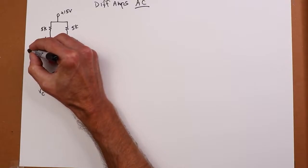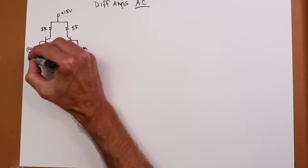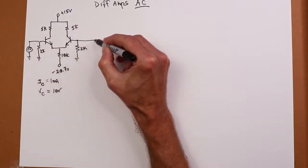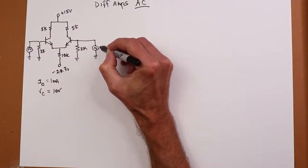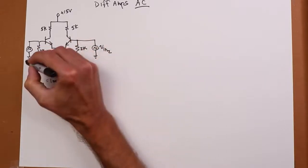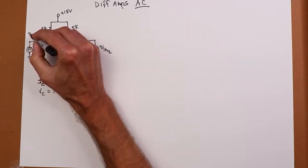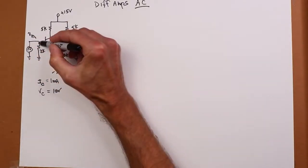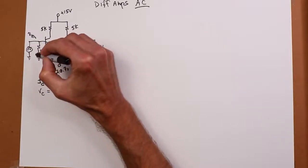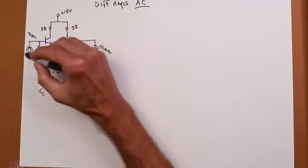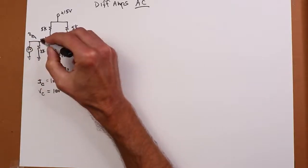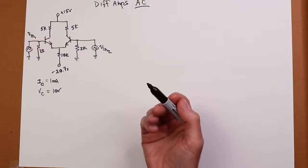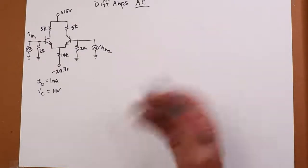In the AC case, we're going to add AC sources. This is a differential amplifier, so we have two inputs: VN2 on one side and VN1 on the other. We'll use superposition — figure out the contribution at one of the two collectors from VN1, then do it for VN2, and add the two pieces together to get the total result.